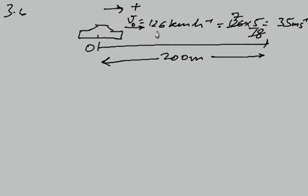So its initial velocity, finally it is stopped so final velocity is 0. Initial position x0 is 0. Final position x is 200 meters.